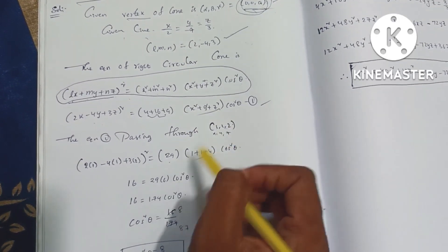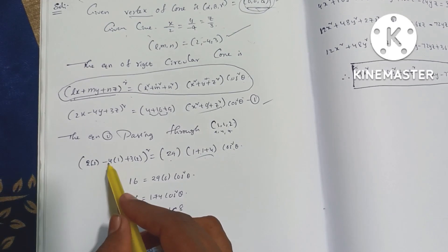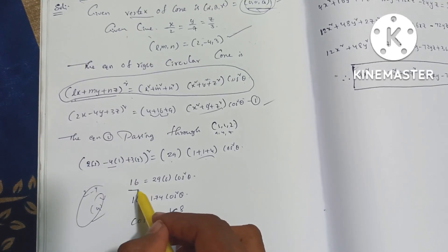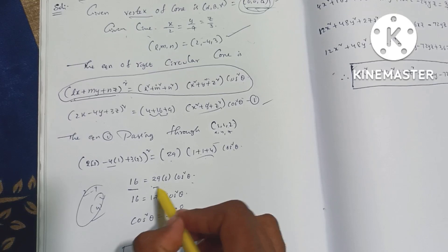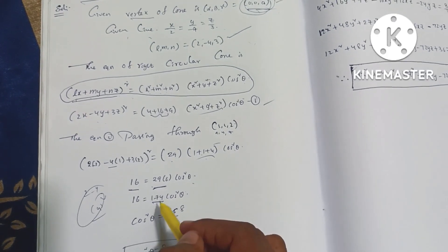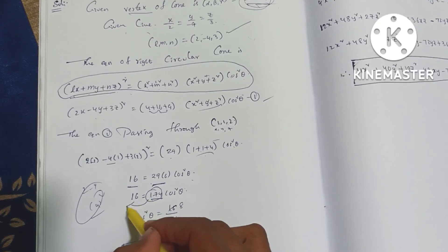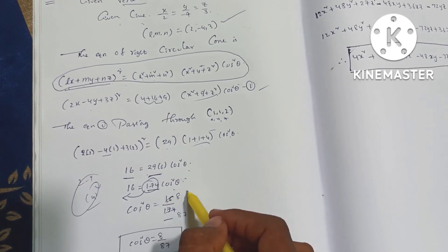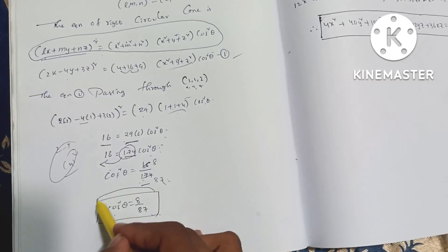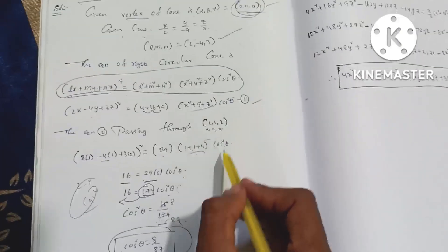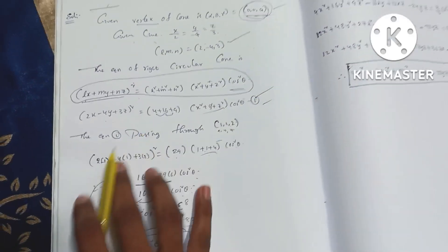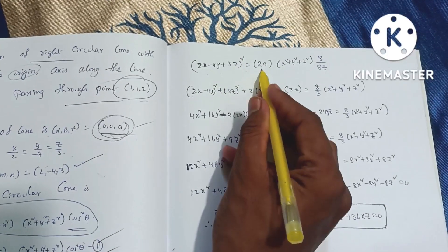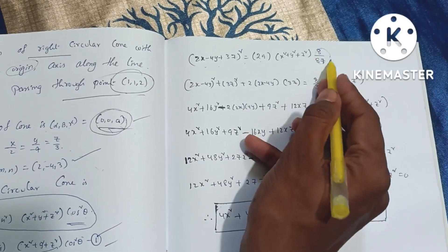Computing cos²θ: using the point, we get 2×1 = 2, minus 4×(−2) = 8, plus 3×6 giving the numerator. The denominator is 29 × 6 = 174. So cos²θ = 16/174, which simplifies to 8/87.